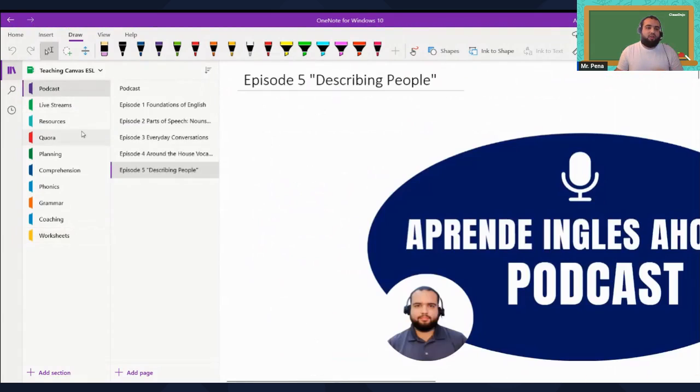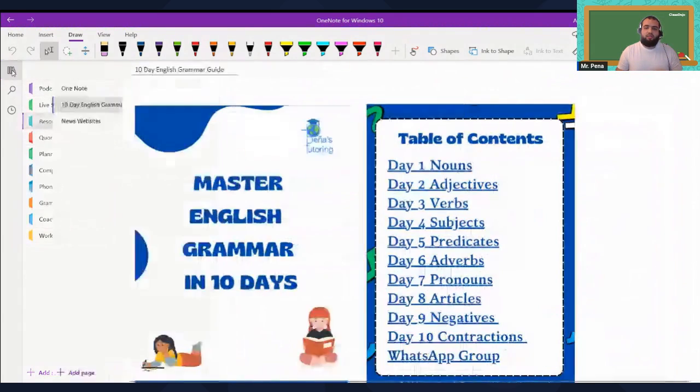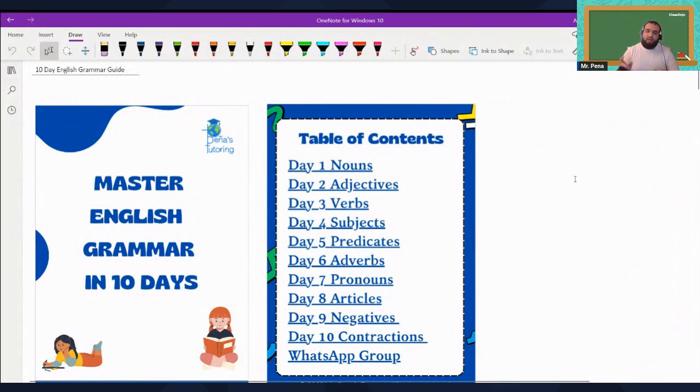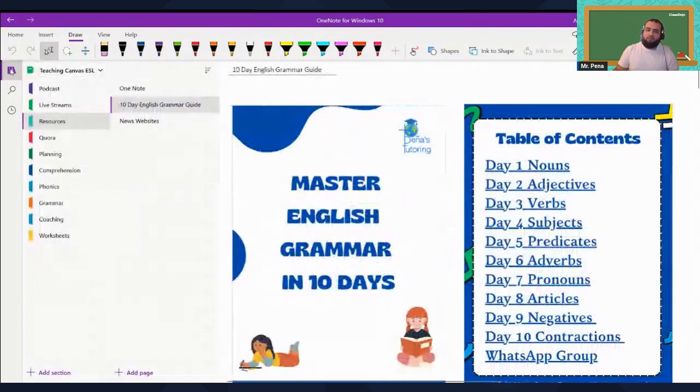One of the downloadable resources available is my 10-day English grammar guide. With this, you'll get the gist of the fundamentals of English grammar within two weeks. If you spend 15 minutes a day reading through this guide Monday through Friday, you'll get the gist of English grammar in two weeks. That's one of the resources you'll be able to download by joining my Patreon using the link down below.